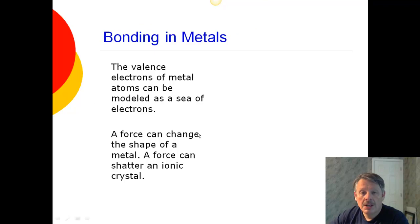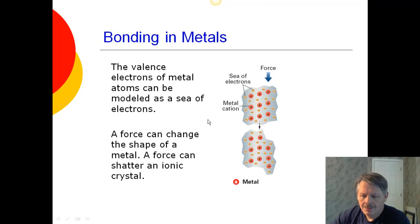Our bonding in metals, if we think of metals, and we put some force on a metal, what's going to happen is the sea of electrons is going to kind of shift around, and the metals are simply going to move, and the electrons are going to move, and everything's still going to be happy. And that's why you can take metal and you can reshape it, you can bend it, you can pound it into a sheet.